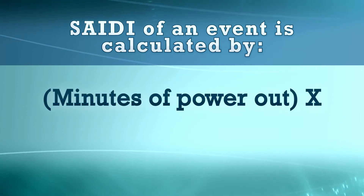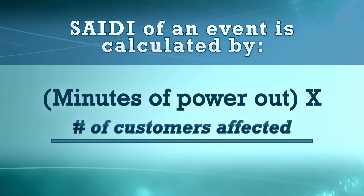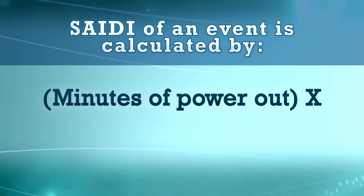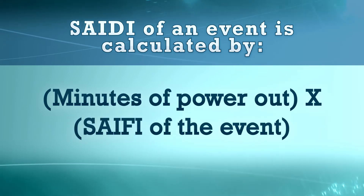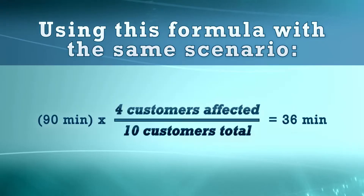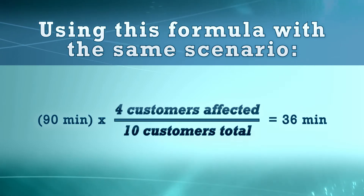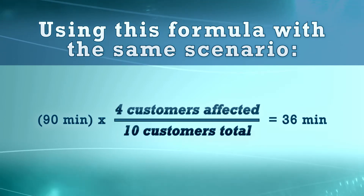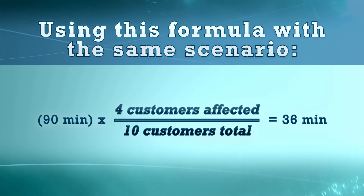SAIDI of an event is calculated by the minutes of power out times the number of customers affected, divided by the number of customers in the system. It can also be described by the minutes of power out times the SAIFI of an event. Using this formula with the same scenario, we have 90 minutes times four customers affected divided by ten customers total, equals 36 minutes, or 36 SAIDI minutes for the event.